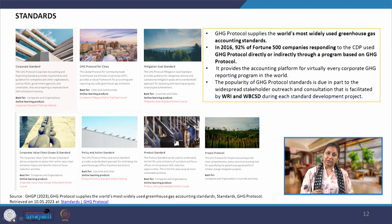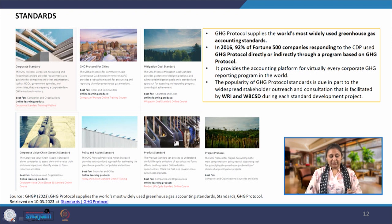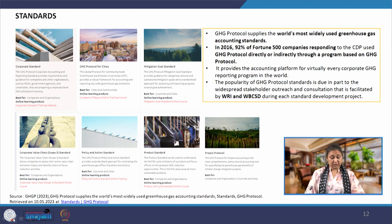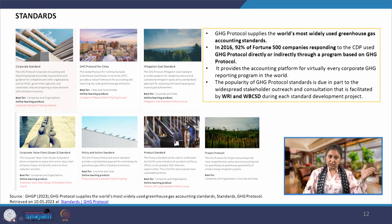Then we have GHG protocol for cities, which is the protocol for community-scale greenhouse gas emission inventories. Cities will have several corporates under their umbrella and many other infrastructure-related activities and projects going on. Then we have the mitigation goal standard, which provides guidance for designing national and sub-national mitigation goals and a standardized approach for assessing and reporting progress towards goal achievement. Then we have the corporate value chain standard, which largely deals with scope 3 emissions.